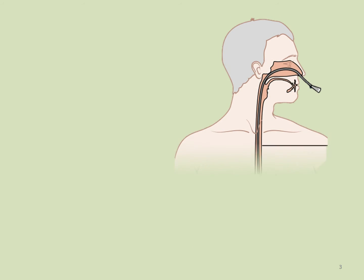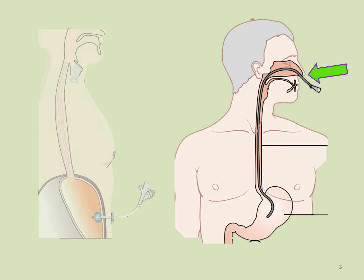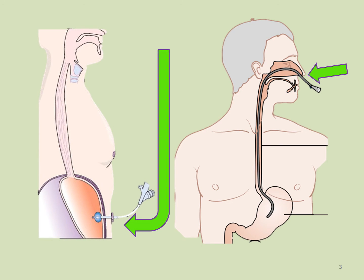For short-term therapy, nasogastric or nasoenteric devices will be used. These devices are inserted through the nose to the stomach — nasogastric tubes — or through the nose to the small intestine — nasoenteric tubes. Enteral access devices may also be inserted through the mouth to the stomach, but this route is typically only used for infants as it is very uncomfortable and can cause gagging. When long-term therapy is required, a percutaneous access device will be surgically inserted.